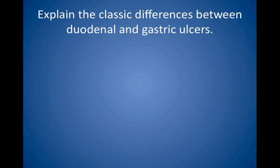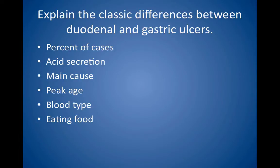Explain the classic differences between duodenal and gastric ulcers. Duodenal ulcers account for 75% of cases of ulcers, while gastric ulcers account for the other 25%. In duodenal ulcers, acid secretion is normal to high, while in gastric ulcers, acid secretion is normal to low. The main causes of duodenal ulcers are Helicobacter pylori, and with gastric ulcers, the main cause is the use of NSAIDs, including aspirin. The peak age of duodenal ulcers is in the 40s, and with gastric ulcers, in the 50s. Duodenal ulcers are classically associated with type O blood, while gastric ulcers are associated with type A blood. With a duodenal ulcer, eating food causes the pain to get better, but then worse two to three hours later. With gastric ulcers, the pain is not relieved or is made worse.